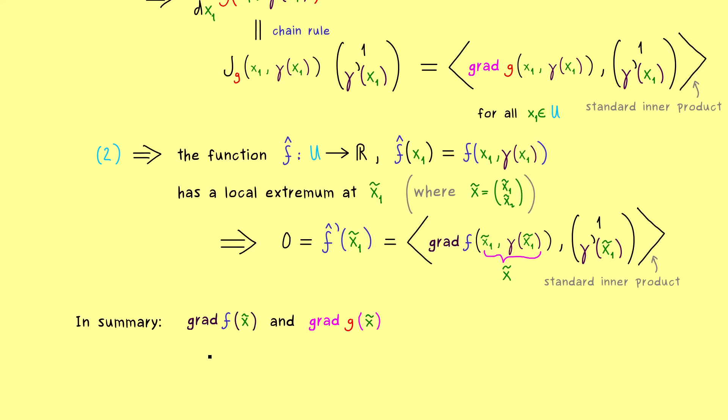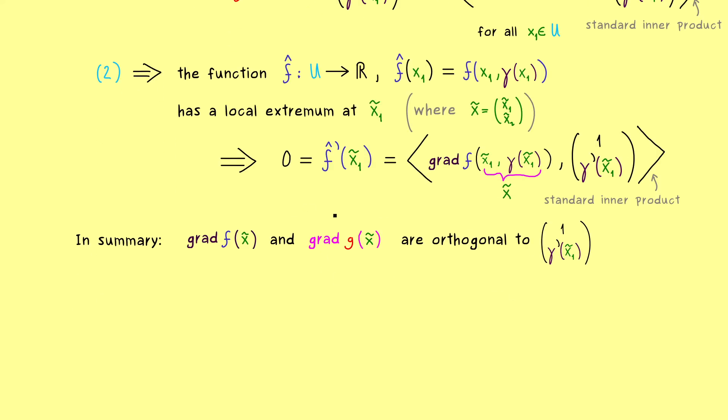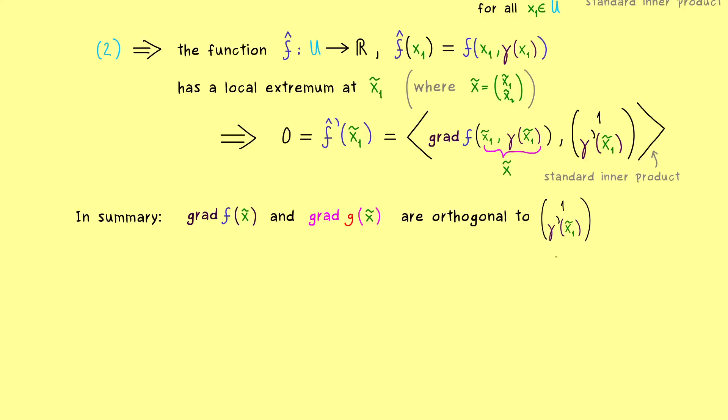So in summary, we get that the gradient of f and gradient of g at point x tilde are orthogonal to the same vector. Since everything lives in R², we don't have much choice for the two gradients. If we visualize this vector with γ, then we immediately see the orthogonal complement of this vector is a one-dimensional subspace in R². So the gradient of f and gradient of g have to lie inside this one-dimensional subspace, which finishes our proof. Both gradients only differ by a Lagrange multiplier λ. And with that we have it.